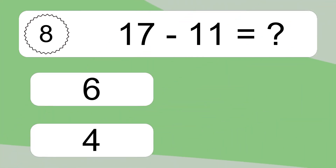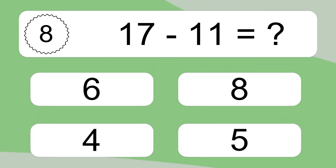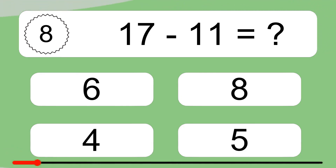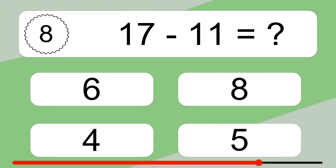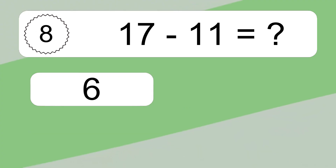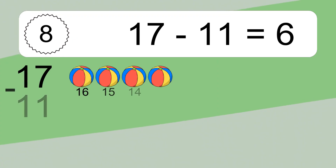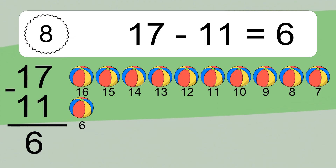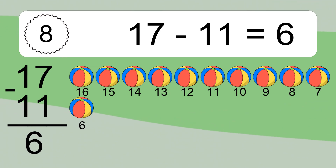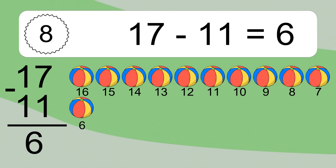17 minus 11 equals what? 17 minus 11 equals 6. Let's count it. 16, 15, 14, 13, 12, 11, 10, 9, 8, 7, 6.